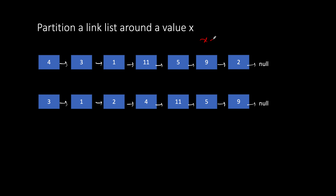Let's take an example where x is equal to 4. The original linked list is 4, 3, 1, 11, 5, 9, and 2. If we partition around 4, all values greater than 4 go to the end and all values less than x go to the front. So 3, 1, and 2 are in the front; 4, 11, 5, and 9 are in the back.